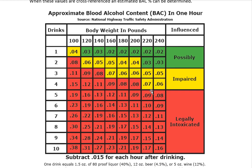There's a chart in the lab that gives a cross-reference. For example, if you're a 180-pound man and you drink four drinks — equivalent to a typical shot of liquor, a can or bottle of beer, or a five-ounce glass of wine (not the whole bottle) — that puts you at about 0.08. So legally, if you blew a 0.08, you would be legally drunk and should not be operating a moving vehicle.